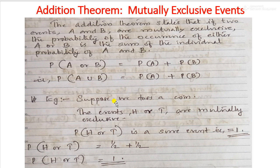Head and tail are mutually exclusive events. The individual probability of head is 1 by 2 and tail is 1 by 2, so the total is 1. The probability of getting either head or tail is the sum of their individual probabilities.